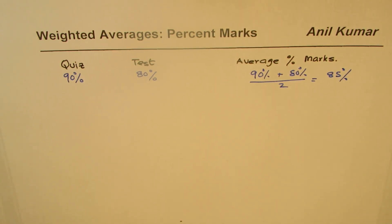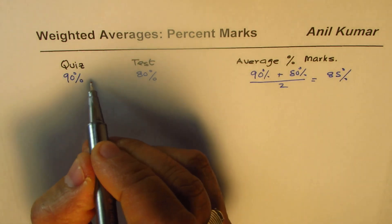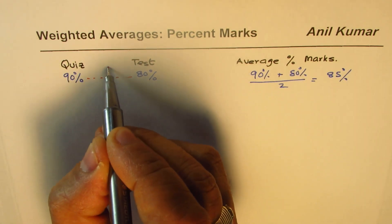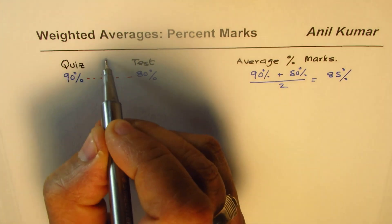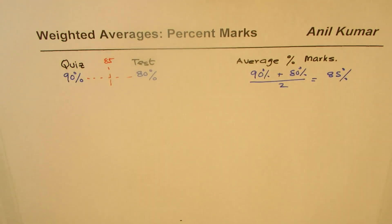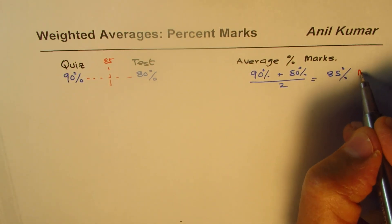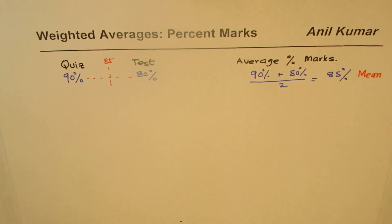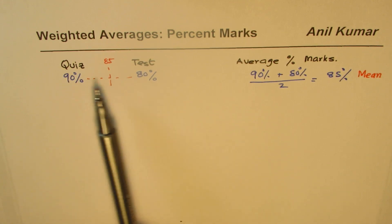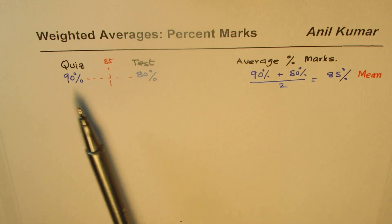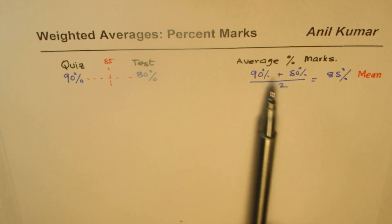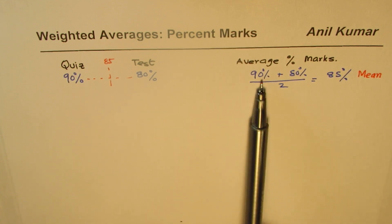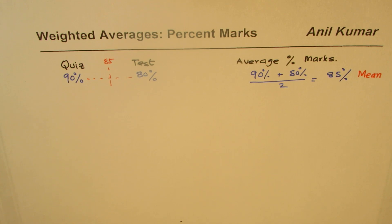So the value we got was the center value, exactly in between — halfway. So 85 is right in the center. We sometimes refer to this as the mean value. This average or mean value is midway between the two. The reason for that is we are saying that both are having the same importance, but at times that may not be the case.